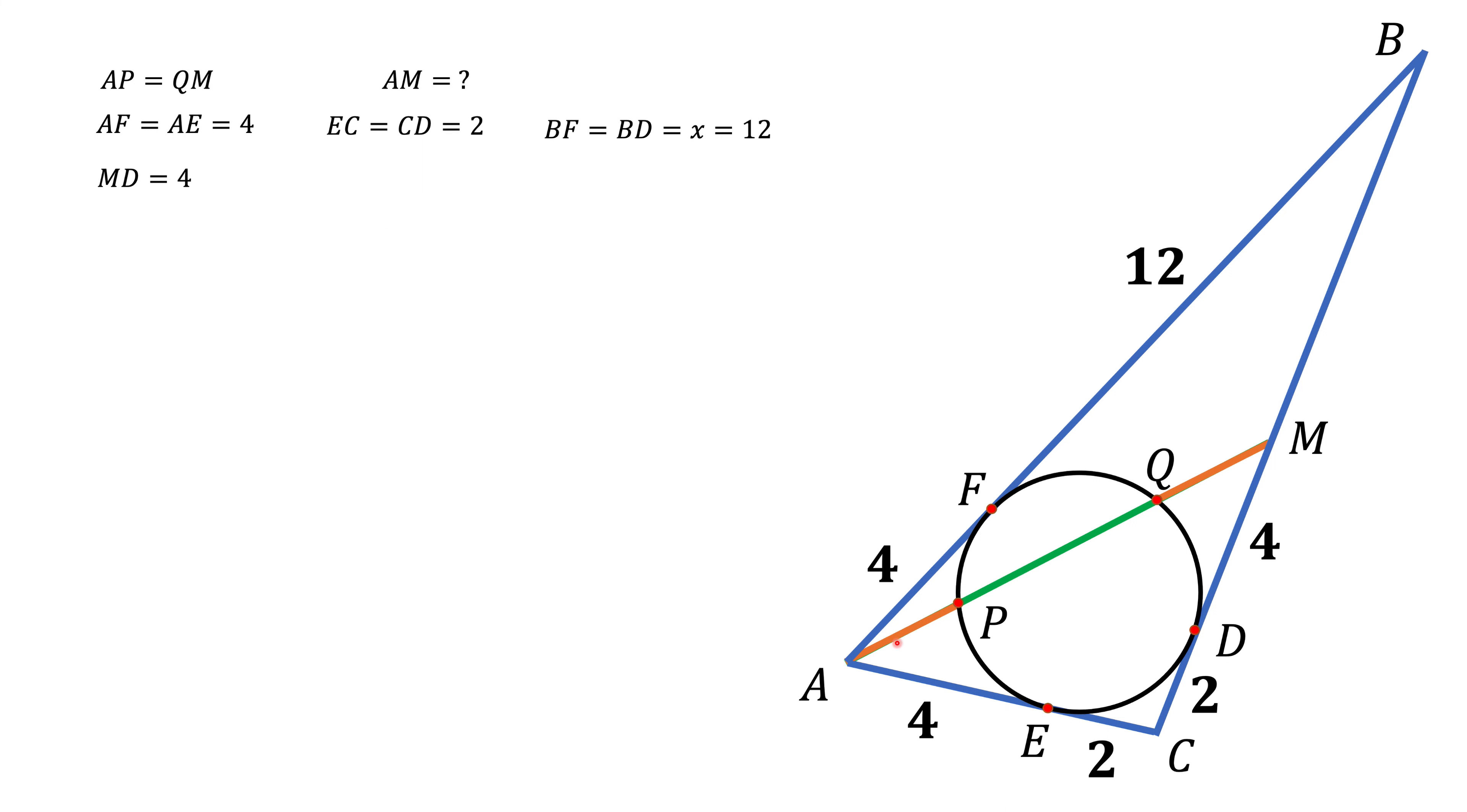And now we are ready to calculate AM. To do that, we're going to apply the law of cosines. Just to remind you, if I have a triangle and I know two sides of this triangle, like A and B, and I know the cosine of the angle between them, I can use this formula to calculate the third side.